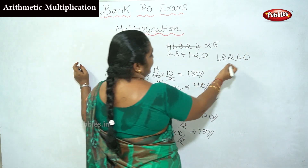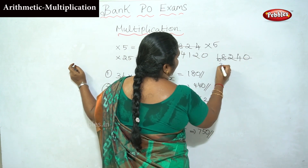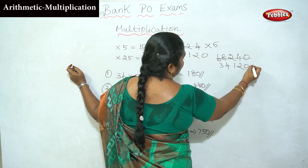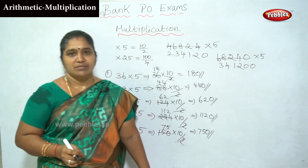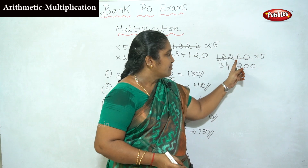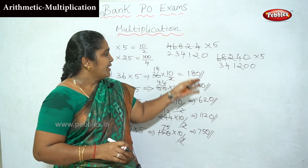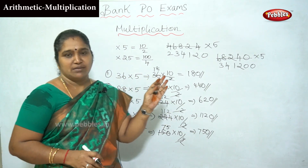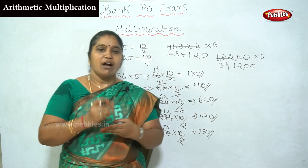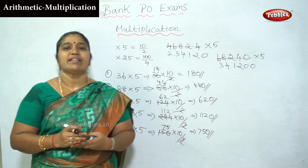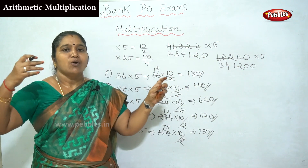Alright. 68240 into 5 — you can multiply with 5 this way. Usually what we do is add 0 to the halved number. Remember: if you multiply with 5, you halve the number and add zero. This gives you the answer for any number of digits — 5, 6, 7 digits.